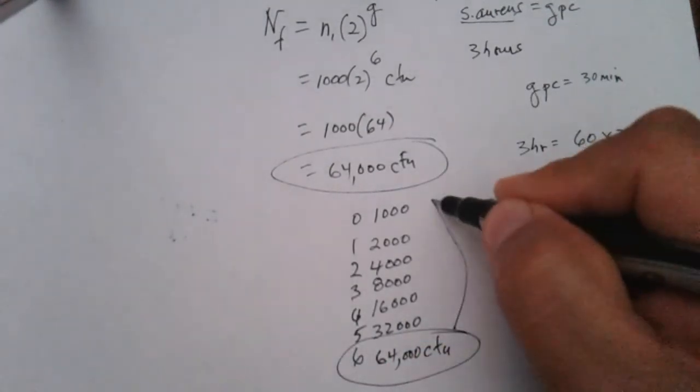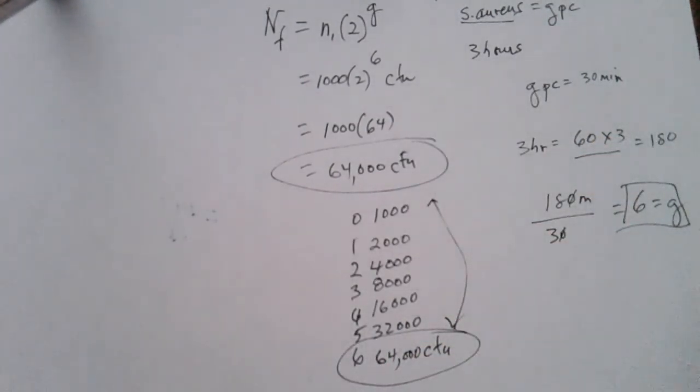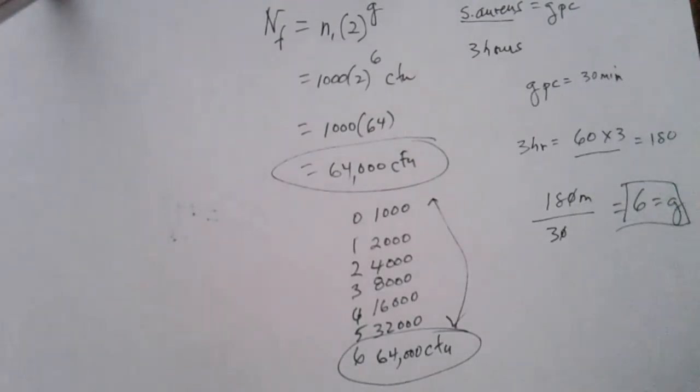So 64,000 CFUs, you can see, is the correct answer. So this is the way you use the population equation. I hope it helps. I'll send this video to you guys, and I hope it helps. All right. Good luck on studying.